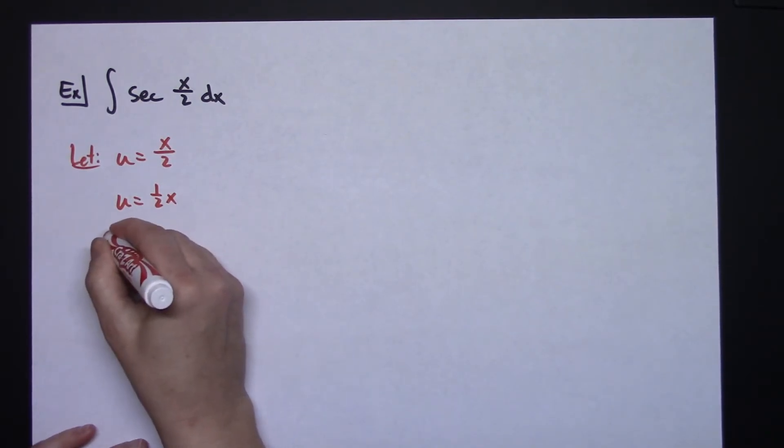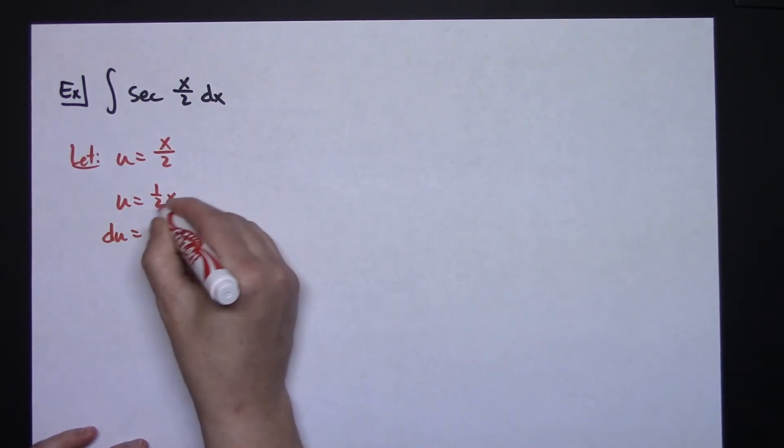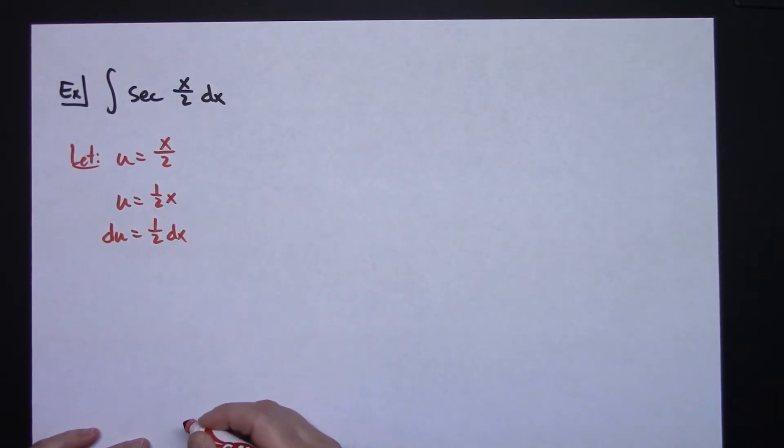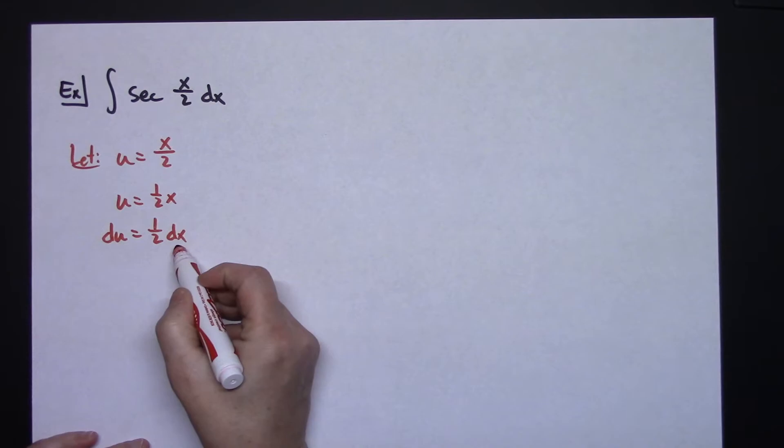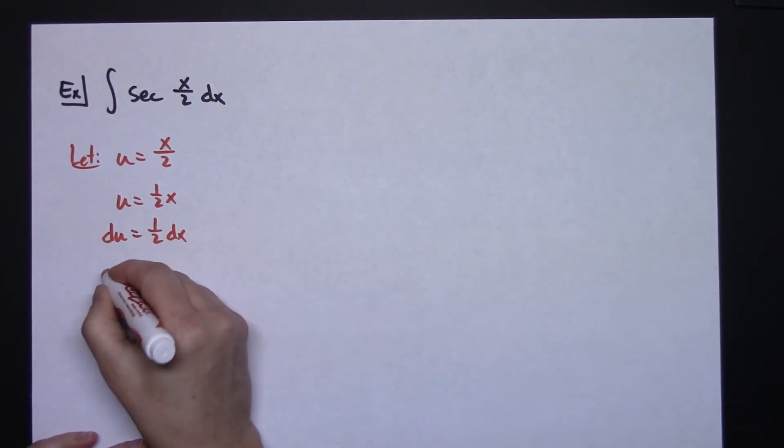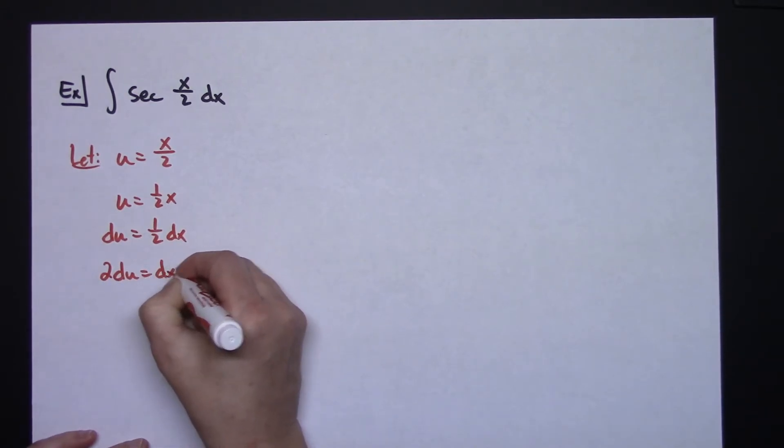Now I'm going to take the derivative of both sides, du. Derivative of one-half x is just going to be one-half dx. If I solve for dx I would need to multiply both sides by 2, so I would have 2 du equals my dx.